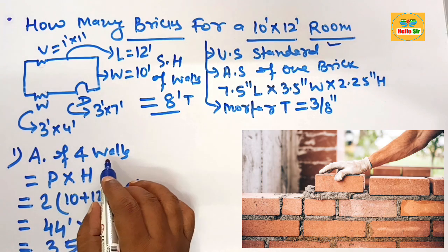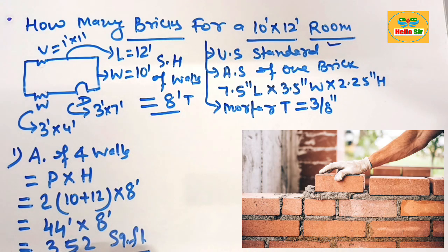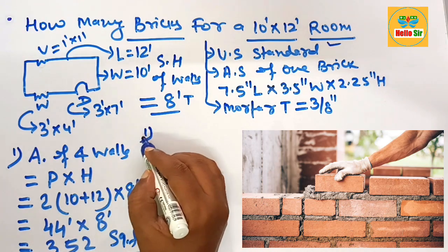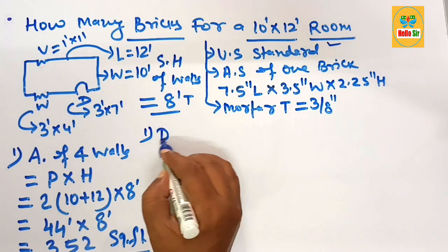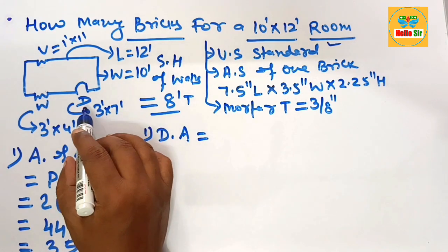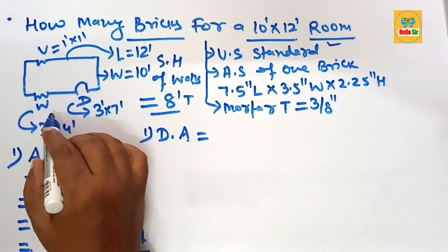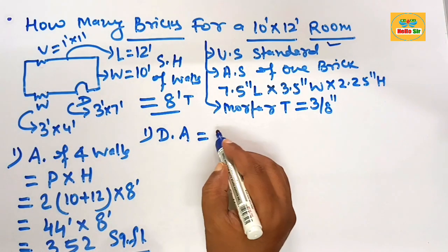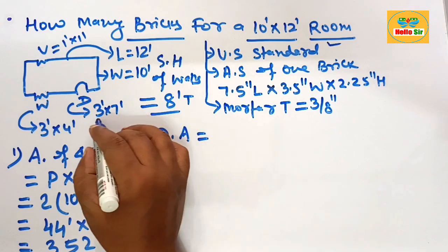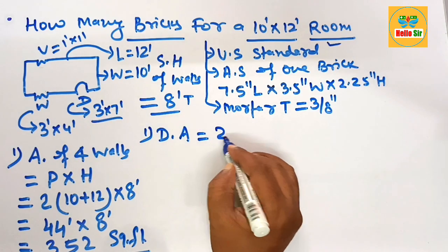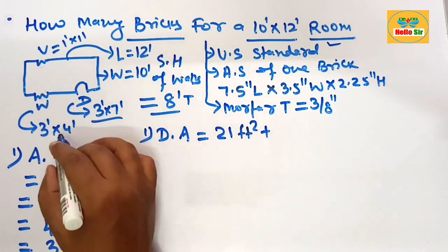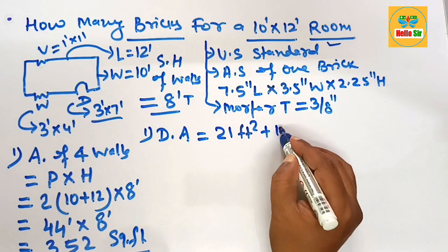This is the area of 4 walls: 352 square feet. Now calculate the deduction area. The deduction area is the area of door, window, and vent that do not require brickwork. Area of door: 3 × 7 = 21 square feet. Area of window: 3 × 4 = 12 square feet.